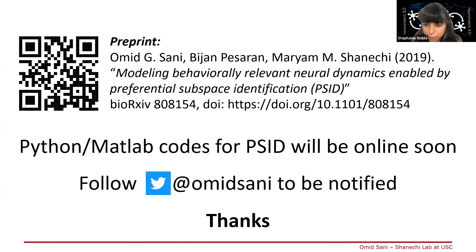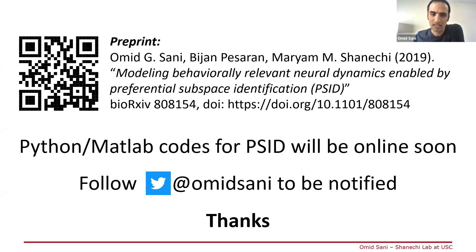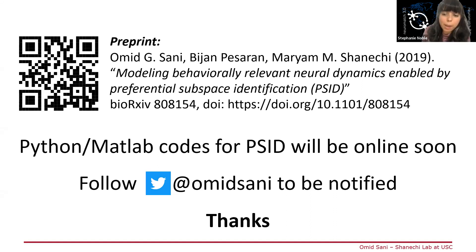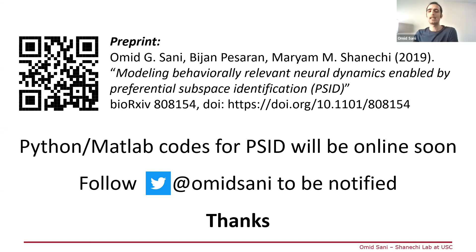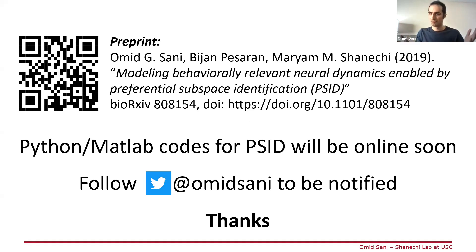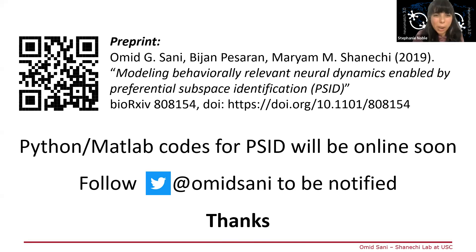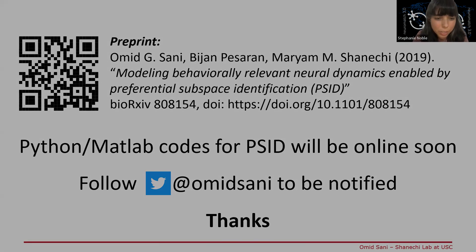There's a follow-up comment from Matthias: at least in mouse M1, the neural variance associated with the task could be very small. Yes, and that's one of the motivations for PSID — because if you blindly try to model all of neural activity, you're likely to focus on just the most variant parts of it, which are likely not related to behavior. The motivation is to not miss those potentially small behavior-relevant variances. Thank you, Omid — we're going to switch gears to Joel.